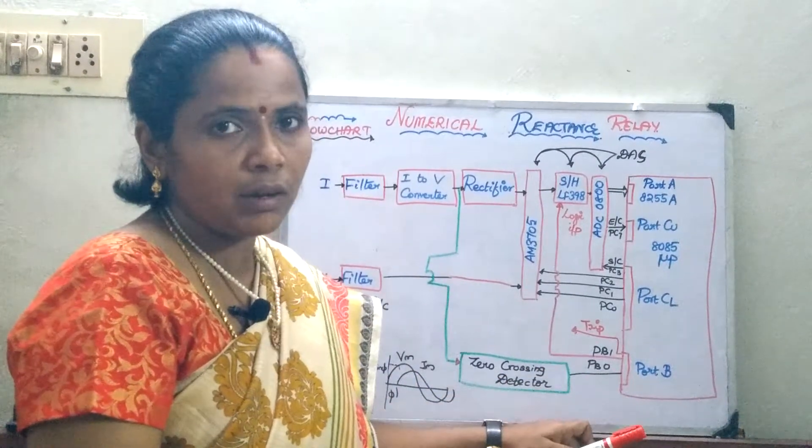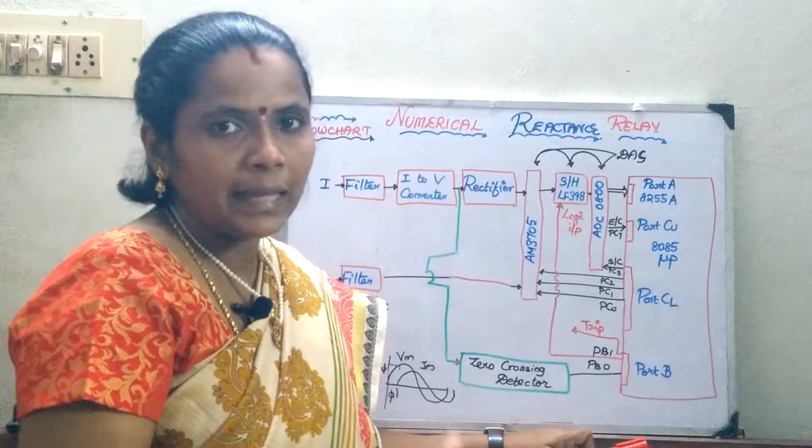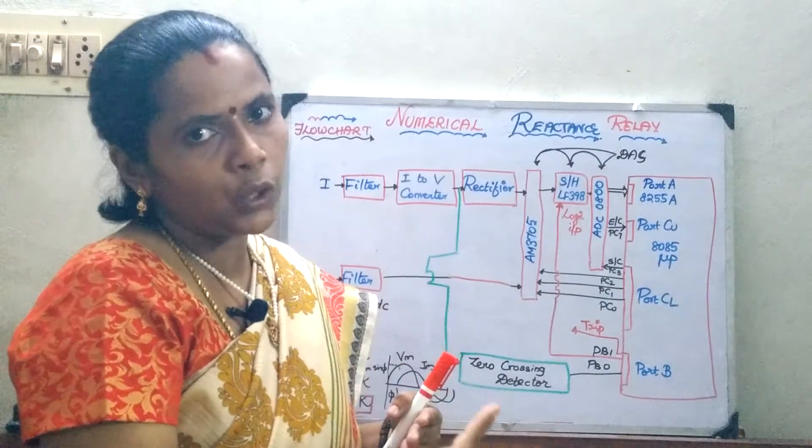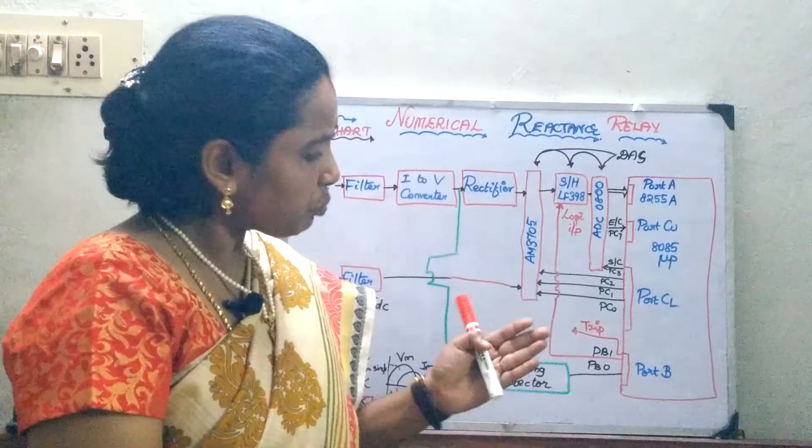So, here this reactance relay is also not a directional relay. Directional relay means it will detect the fault in one particular direction, usually in the forward direction.